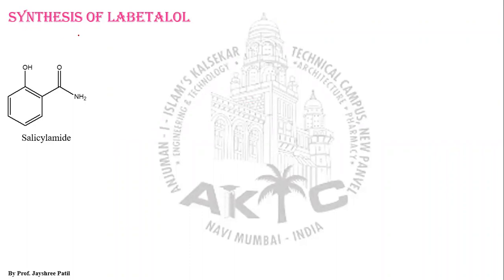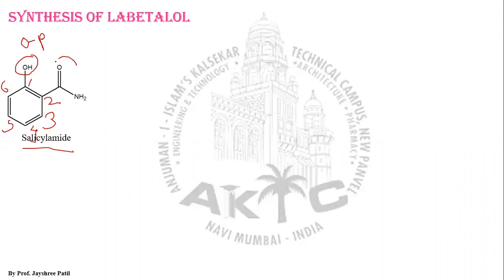Today we are going to discuss the synthesis of labetalol, which is a beta blocker. The starting material for labetalol is salicylamide. This is the representative structure for salicylamide, with the numbering 1, 2, 3, 4, 5, and 6. In this structure, at the first position a hydroxy group is present, which we can call the ortho/para directing group, and at the second position an amide group is present, which is the meta directing group.